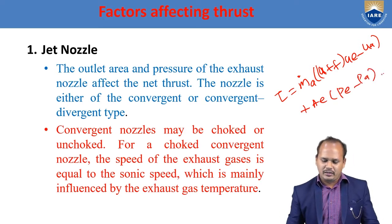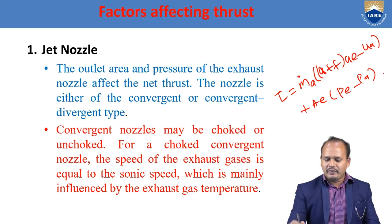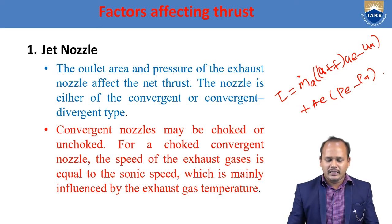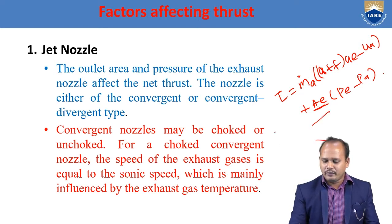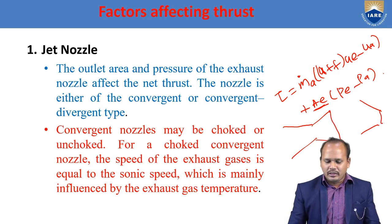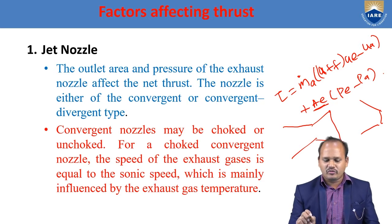This is the equation for thrust produced by an aircraft engine. From this equation, we can see how the nozzle affects thrust. What is Aₑ? It is the exit area of the nozzle — either a convergent nozzle or a convergent-divergent nozzle. The area of the nozzle has a direct impact on the thrust produced by the engine.